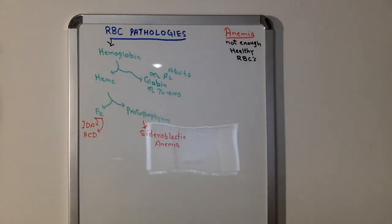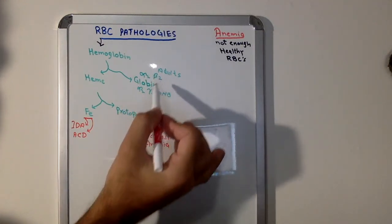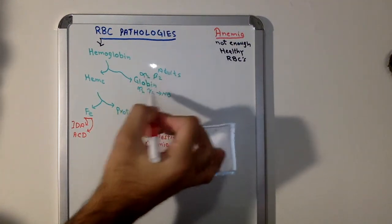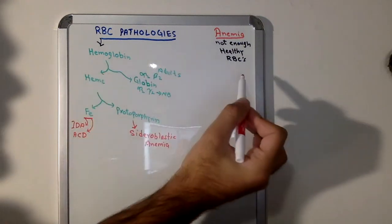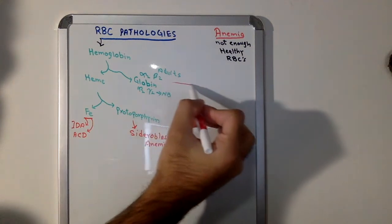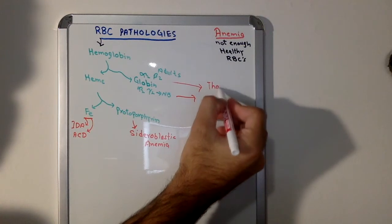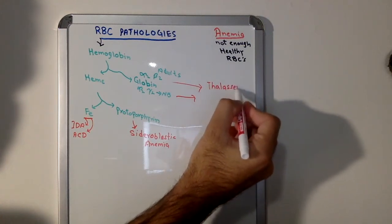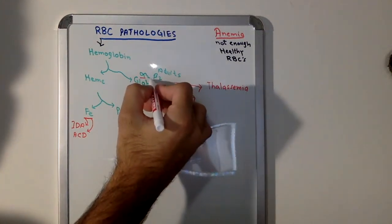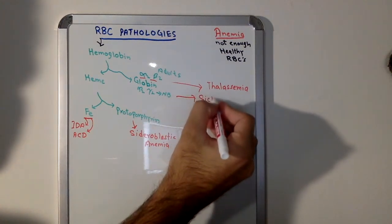Move up to next. We have globin here. It has two alpha chains and two beta chains, and newborn has two alpha and two gamma chains. What if there is something wrong with globin? No hemoglobin, not healthy RBCs. The problems which are related to globin chains, there are two. The one is thalassemia. This problem can be with the alpha chain or it can be with the beta chain.